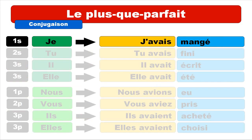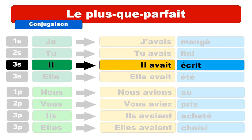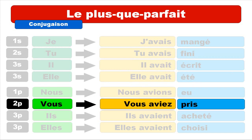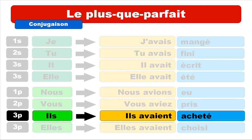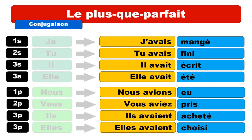Let's have a few examples with avoir — first without, then with liaisons: j'avais mangé, tu avais fini, il avait écrit, elle avait été, nous avions eu, vous aviez pris, ils avaient acheté, elles avaient choisi.